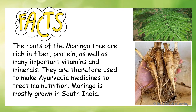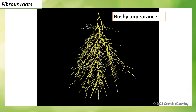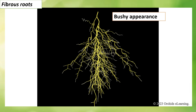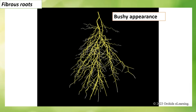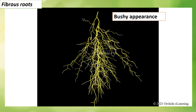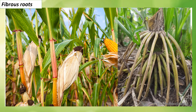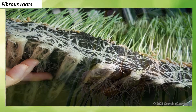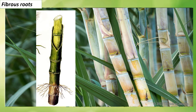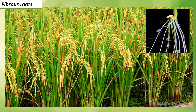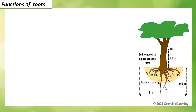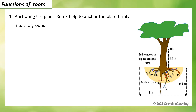Moringa is mostly grown in South India. Fibrous roots are those that grow from the base of the stem and have a bushy appearance. These roots are thin and almost equal in size. Grass, maize, wheat, onion, sugarcane, and rice are examples of plants with fibrous roots.